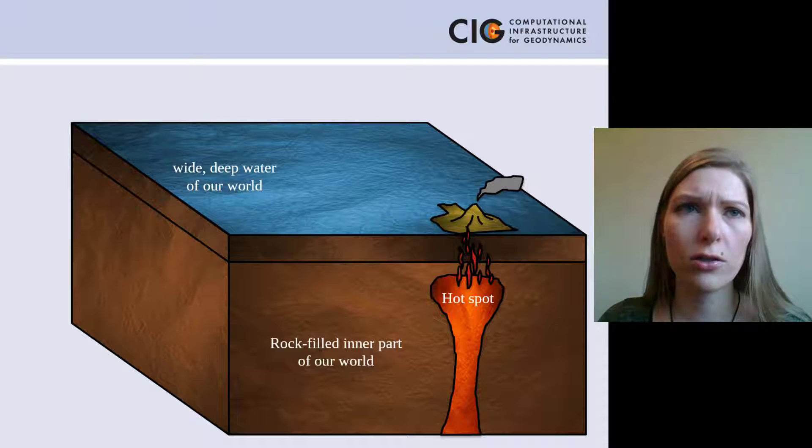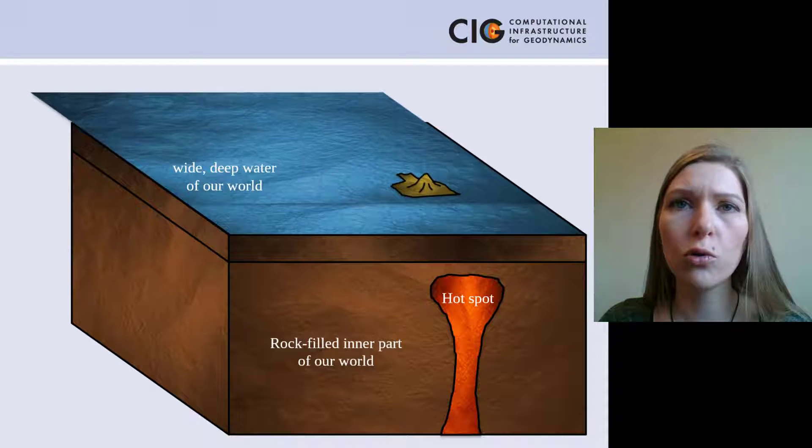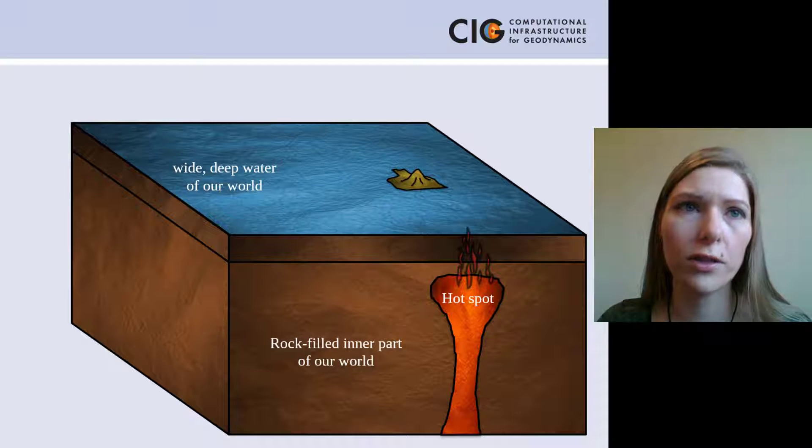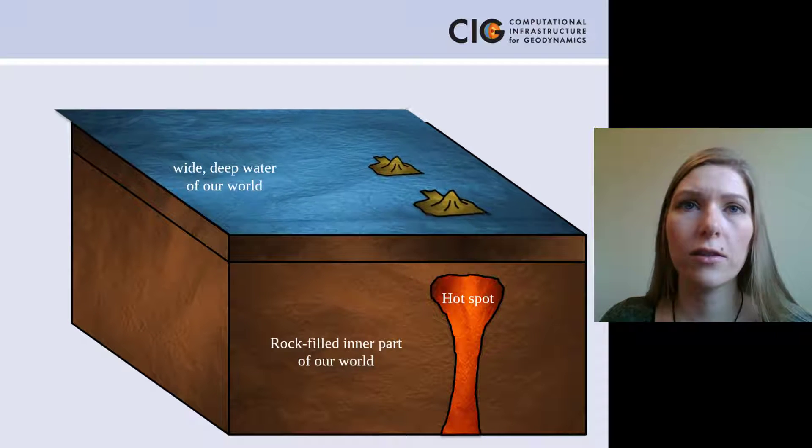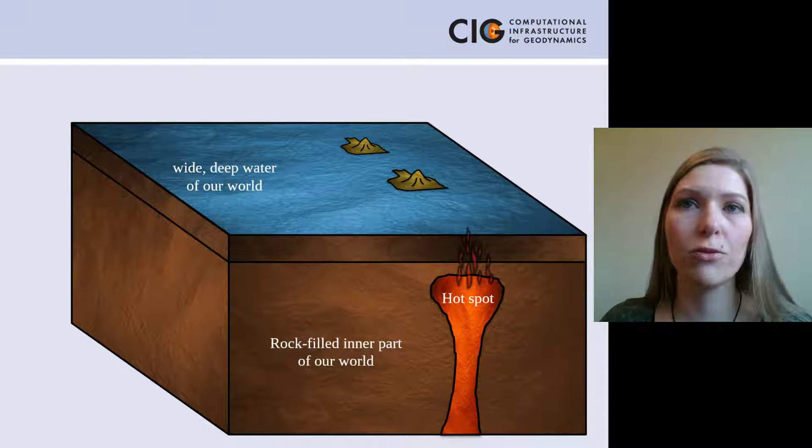Over time, these rocks make a new piece of land and because the top of the world moves over the inner part of our world, where the hot spot stays fixed, new pieces of land often form in lines, making a hot spot track.